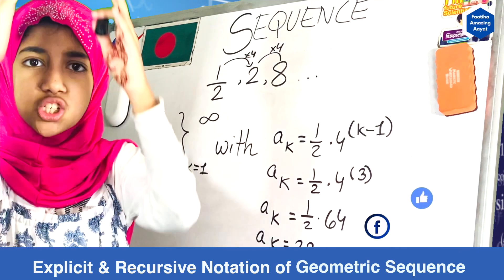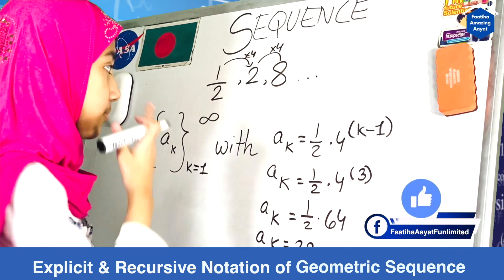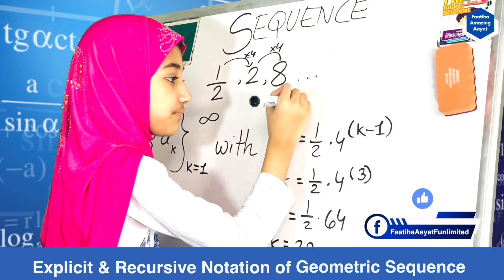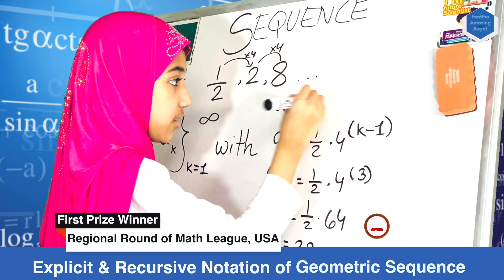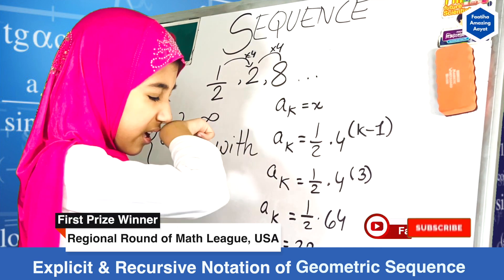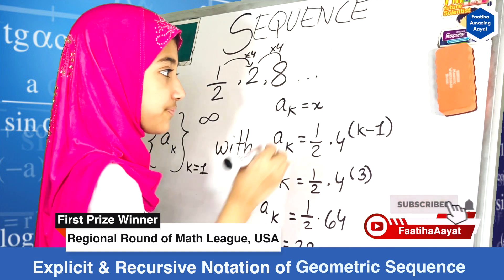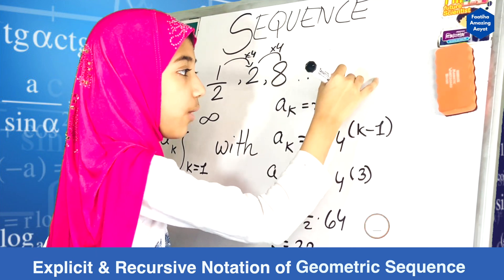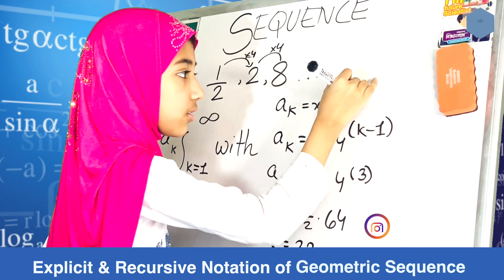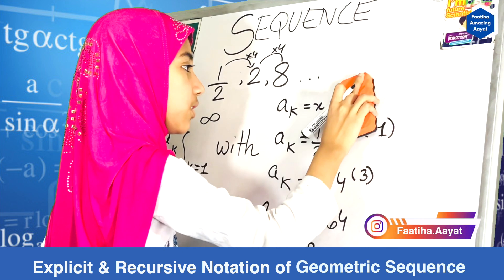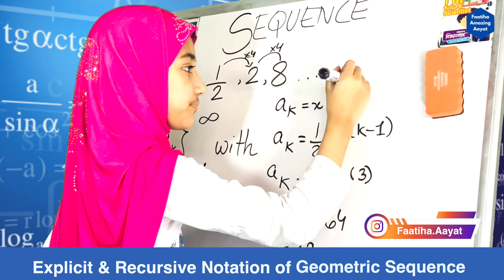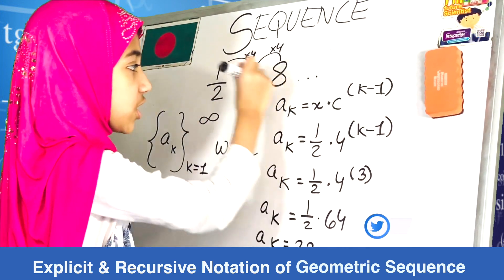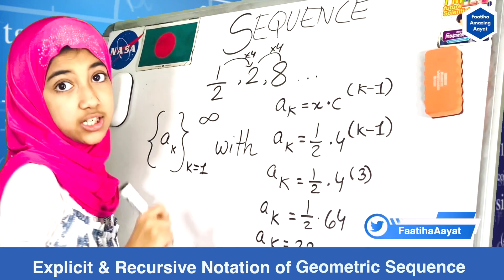Now what is the basic structure that you need to remember? The basic structure is A sub k is equals to your first term times your common difference to the power k minus 1. Okay, this is the basic structure that you need to remember.